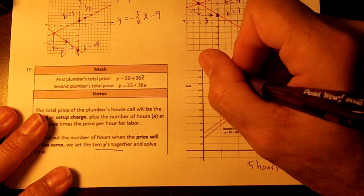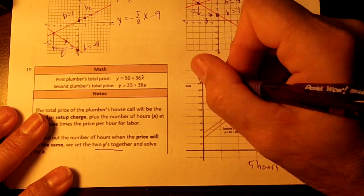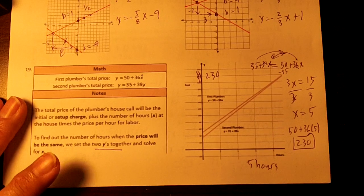So at $230. So at 5 hours, each of them will have $230.